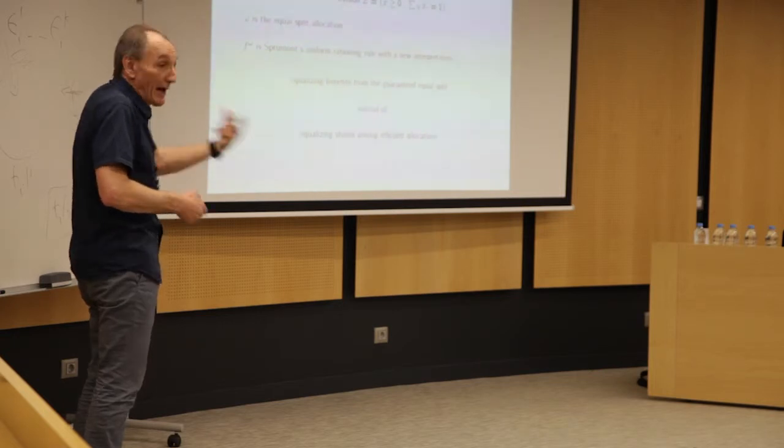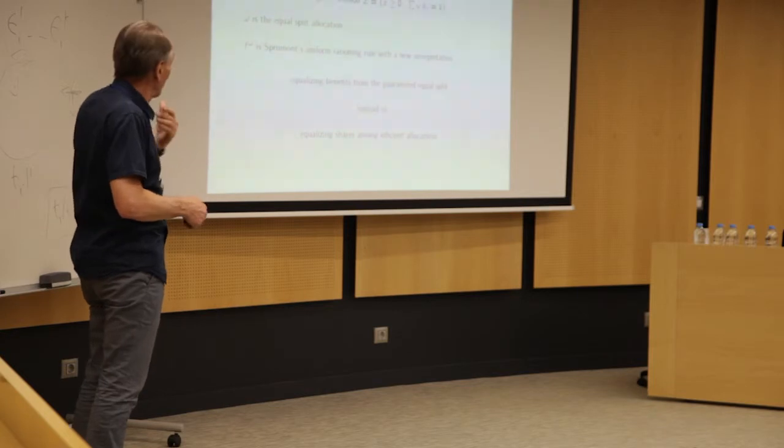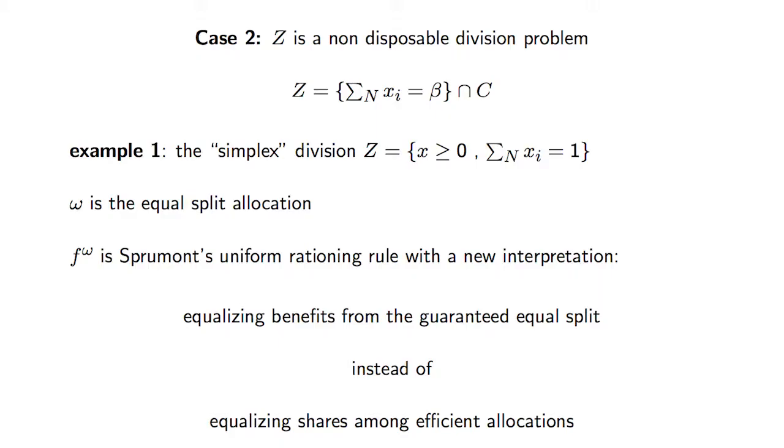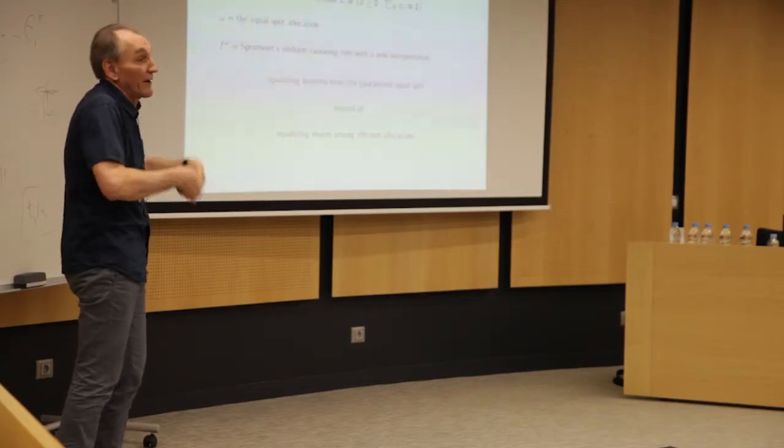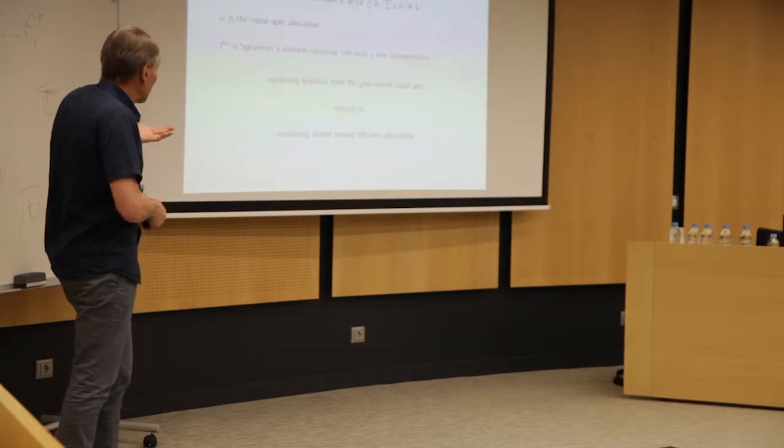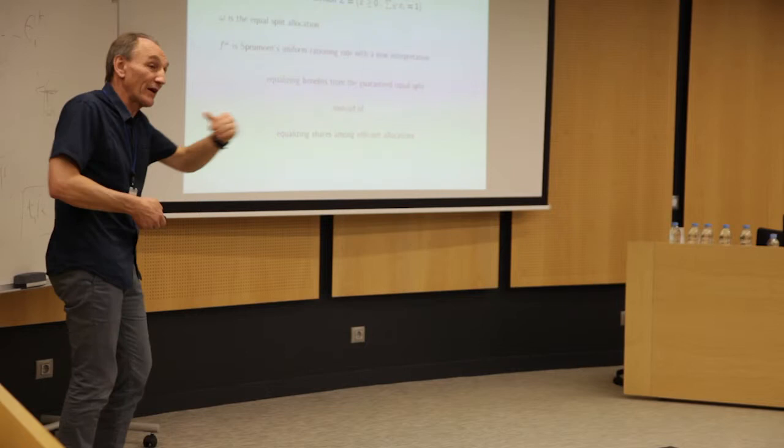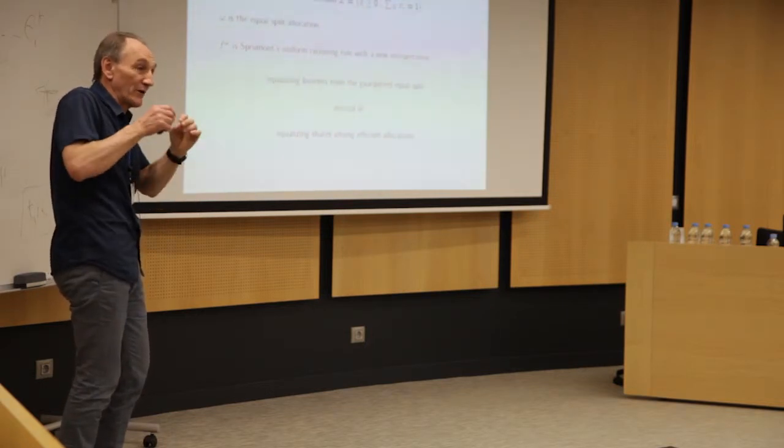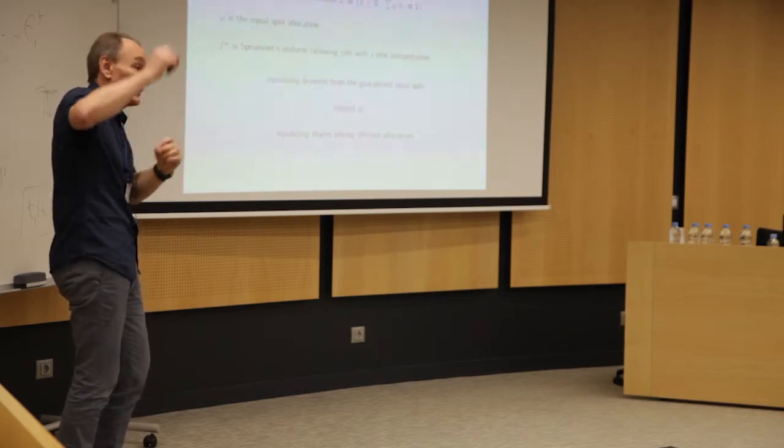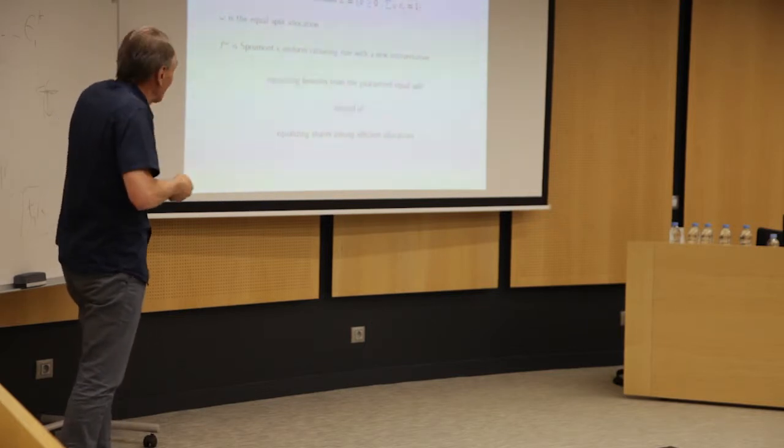So there is only a single rule F_omega in that context. And it's the equal split allocation. And of course the rule we find because we already know that the uniform rationing rule is canonical is again the uniform rationing rule. However, we have a kind of a new interpretation, nothing very deep, but the traditional way we interpret the rationing rule is equalizing share among efficient allocation. We have the efficiency constraints that, you know, the one sidedness condition that if there is excess demand, everybody should get below or vice versa. And given that constraints, we equalize share and we get a Lorentz dominant location. Now here you do something else, which doesn't look exactly the same at first, but in fact turns out to be the same, that we equalize benefits from the guaranteed equal split.